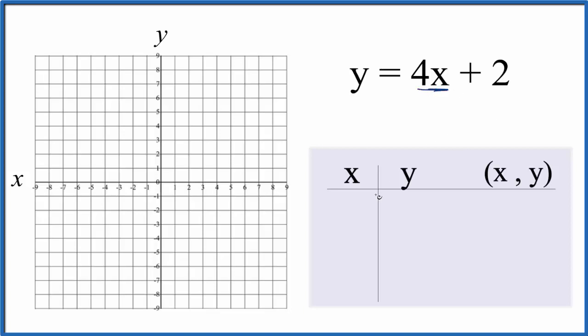So let's say x, let's put a 0 in for x, that's a good place to start. If we have 4 times 0, that's 0 plus 2, that gives us 2.